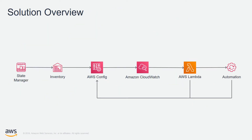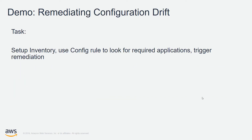The general workflow is as follows. State Manager is configured to collect inventory from EC2 instances. AWS Systems Manager then sends that inventory data over to AWS Config. When a rule is evaluated and reported as non-compliant, CloudWatch will trigger a Lambda function that executes an AWS Systems Manager automation document. If the document runs successfully, Config updates the compliance status. What we're going to do today is enforce the installation of the Amazon Inspector Agent on your EC2 instances.